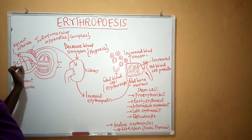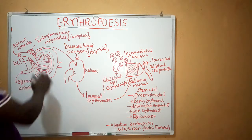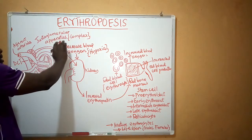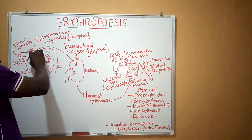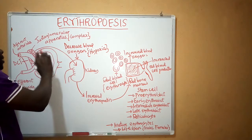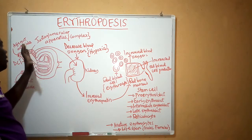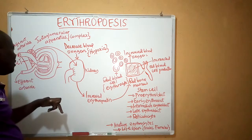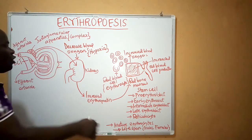The kidney detects low oxygen especially at the portion of the nephron between the margin of Bowman's capsule and the distal convoluted tubule (DCT). Here in between, there is the juxtaglomerular apparatus or juxtaglomerular complex, which is composed of varieties of cells playing a major role in producing a certain kind of protein.